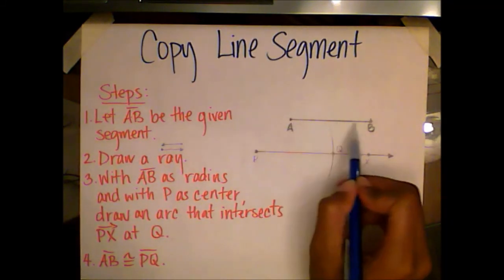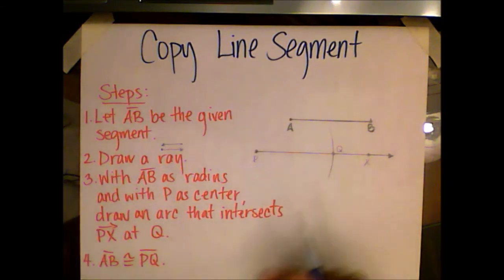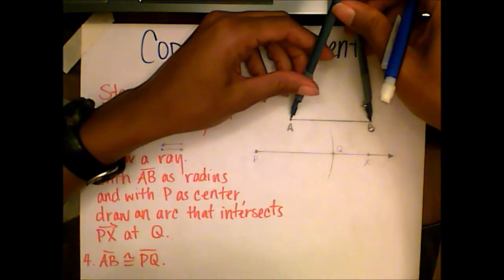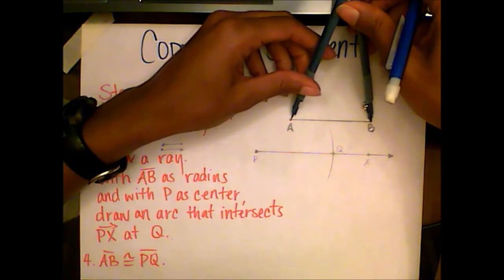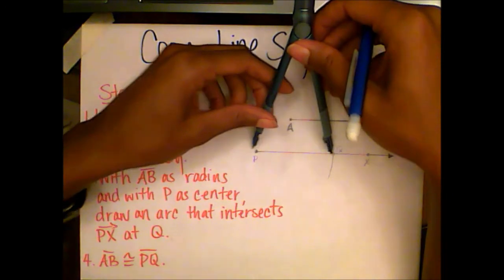Now, line segment AB is congruent to line segment PQ. And if you want to do a quick check, you can measure the radius again, or you can measure the length of line segment AB, and then place it over here, and they are congruent to each other.